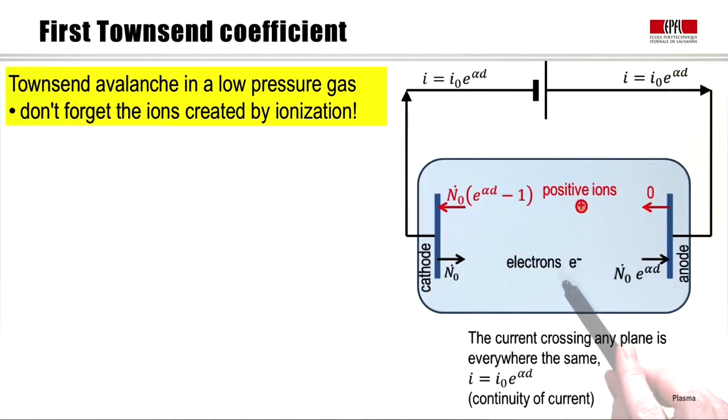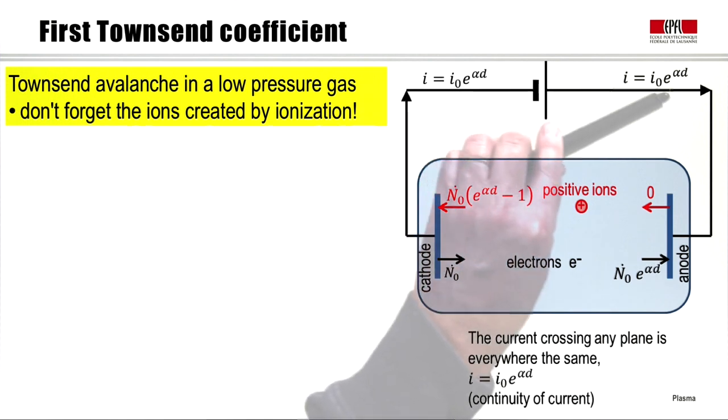Don't forget that every electron ionizing event creates positive ions which travel back in the opposite direction. Therefore, you can convince yourself that the current crossing any plane is everywhere the same, by continuity of current. So, the number of electrons arriving at the anode is N0 dot e to the alpha d. There are no positive ions leaving the anode, so the minus e times this is the current arriving here. The positive ions travel back, and the sum total of current arriving at the cathode is also I0 e to the alpha d. And this current circulates also in the external circuit.